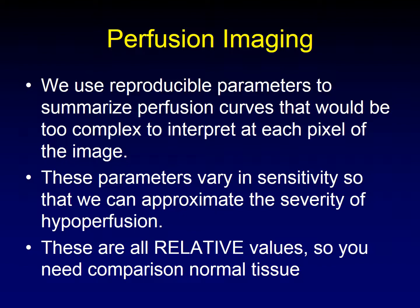In summary, in perfusion imaging we use reproducible parameters from this complex perfusion curve that would be very difficult for us to interpret at each pixel in the image. These parameters vary in sensitivity so that we can approximate the severity of hypoperfusion. Remember that these are all relative values — none of these are actual measurements of perfusion. So you need to compare to an area of normal tissue to know how severe the abnormality is, or whether there's really an abnormality there at all.